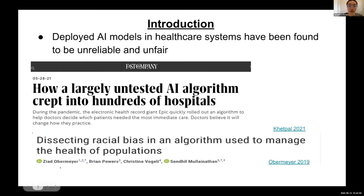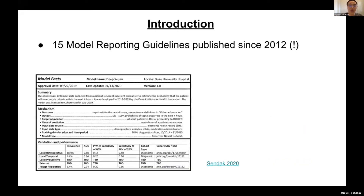One example is the deterioration index being deployed without validation. You're probably also familiar with Ziad Obermeyer's work showing that an insurance algorithm exhibited racial bias toward Black patients compared to White patients. One way the literature has tried to address this is through model reporting guidelines that communicate important properties such as performance across different datasets.